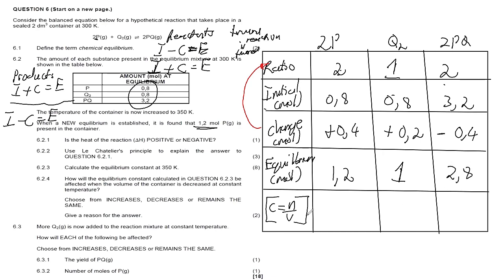To get concentrations, we go back to the statement: the volume is 2 dm³. Concentration equals moles at equilibrium divided by volume. So: P = 1.2 ÷ 2 = 0.6 mol·dm⁻³; Q₂ = 1.0 ÷ 2 = 0.5 mol·dm⁻³; PQ = 2.8 ÷ 2 = 1.4 mol·dm⁻³.